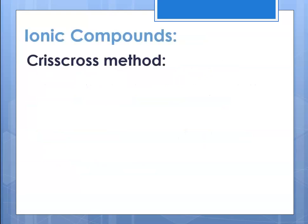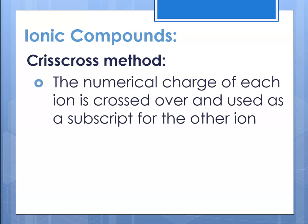To do that, we use something called the crisscross method. You'll see me referring to lowest whole number ratio, and I'll talk about using the factor method. With the crisscross method, we take the numerical charge of each ion and cross it over to become the subscript for the other ion.